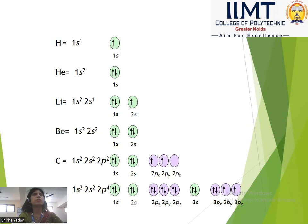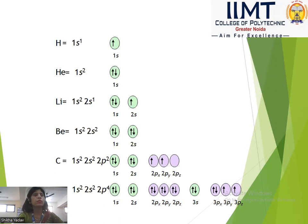The order of filling is: first 1s, then 2s, then 2p, then 3s, then 3p, then 4s, then 3d, then 4p, and then 5s.